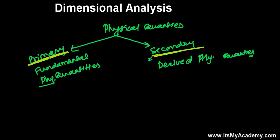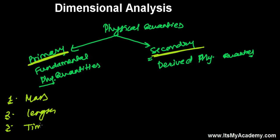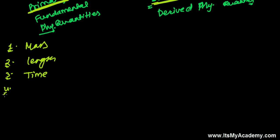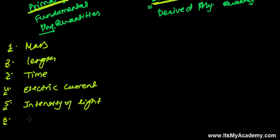First we should learn what the fundamental physical quantities are — understanding Dimensional Analysis is completely based on them. The seven fundamental quantities are: mass, length, time, electric current, intensity of light, temperature, and amount of substance. These fundamental quantities do not depend on any other factors.